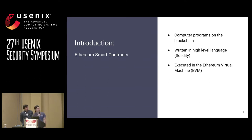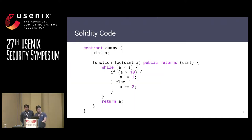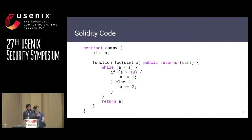Smart contracts are typically written in high-level languages. The most popular language is Solidity, and they're executed in a virtualized environment named Ethereum Virtual Machine, or EVM for short. Here we'll take a look at an example contract. This is a pretty trivial one. As we see, it's similar to a class in other languages — it has some variables and a few functions to interact with it. In this case, it only has one. This will be our running example in our tool.